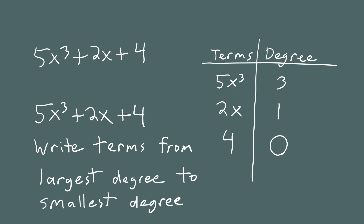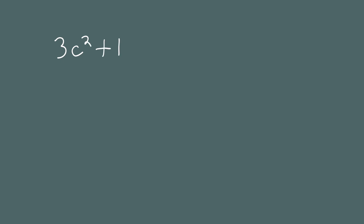Let's look at another example more quickly and focus on why there's a standard form — is it just for testing, or does it have a real benefit? It does have a benefit. The next polynomial is 3c squared plus 12 minus 9c to the fifth plus 7c.